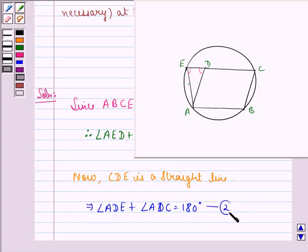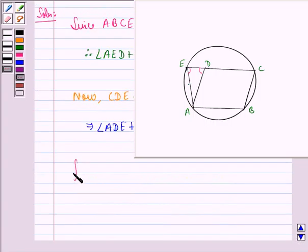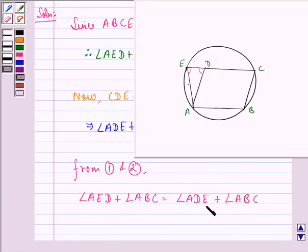We call this two. From one and two, we have angle AED plus angle ABC equals angle ADE plus angle ABC, because both equal 180 degrees. This implies that angle ABC cancels out, and we have angle AED equals angle ADE.